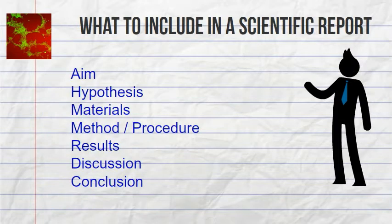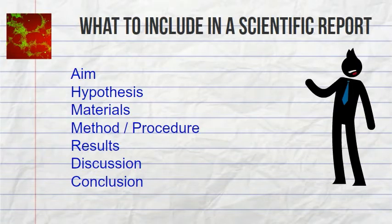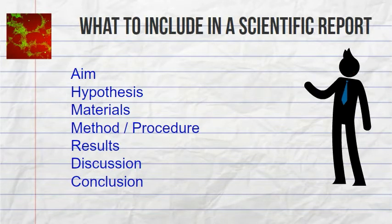The aim is the outline of your investigation. The hypothesis is the predicted outcome of your investigation with a justification for your reasoning. Your hypothesis should address the aim of the investigation.